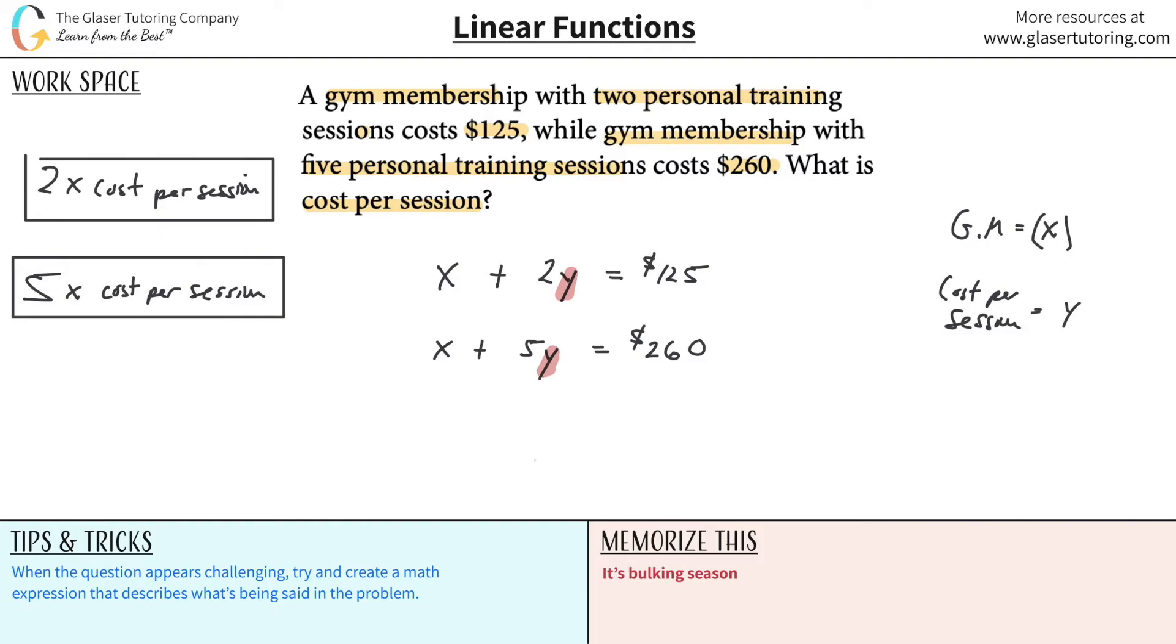Let's get rid of this. And let's take this second equation. Let's solve this thing for, let's solve it for X. So actually, let me break these on up. So one over here, one over here. So let's solve this equation for X. So it's going to be, we have to subtract the 5Y on over to the left. So it's going to be X equals 260 minus 5Y.